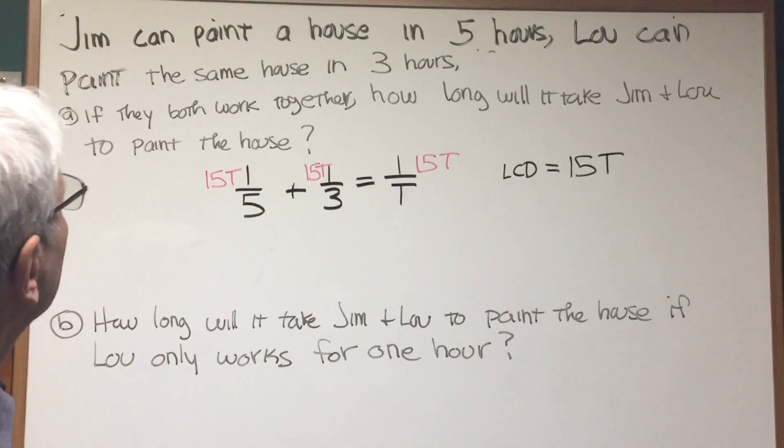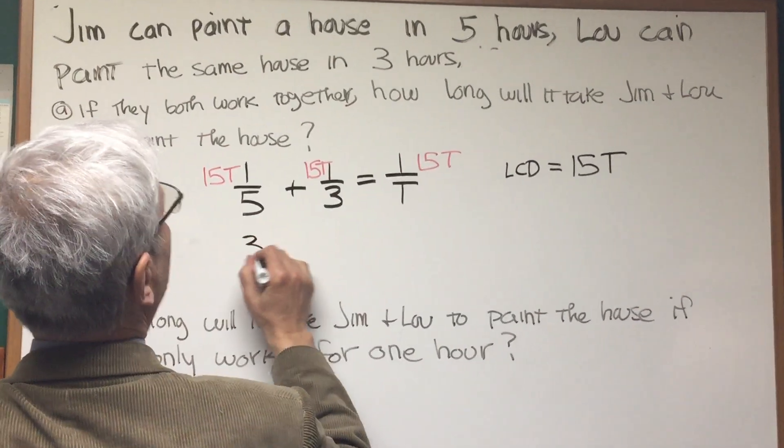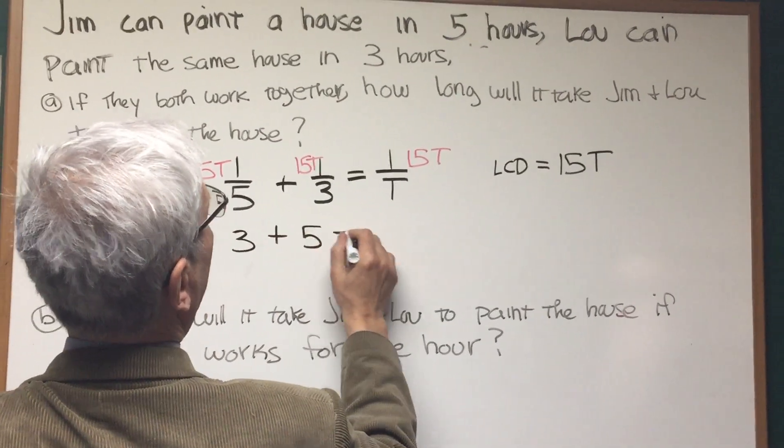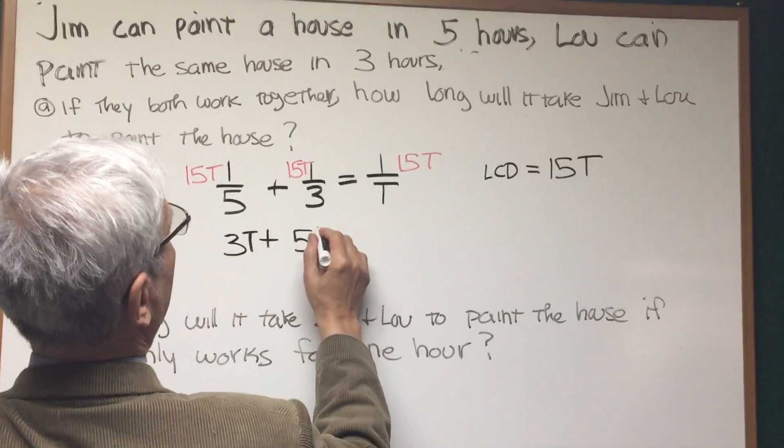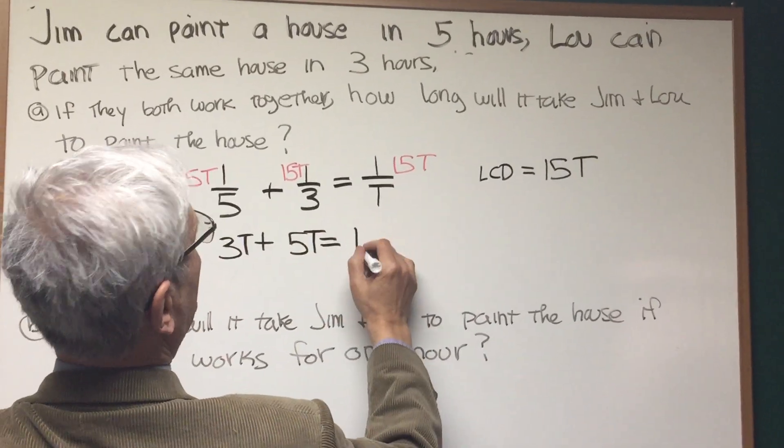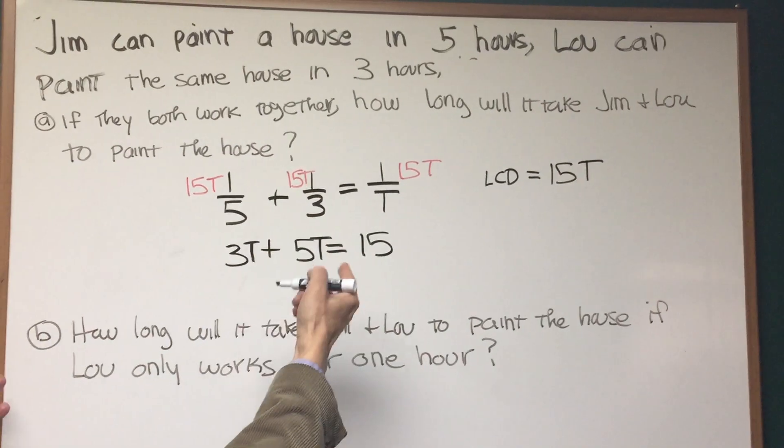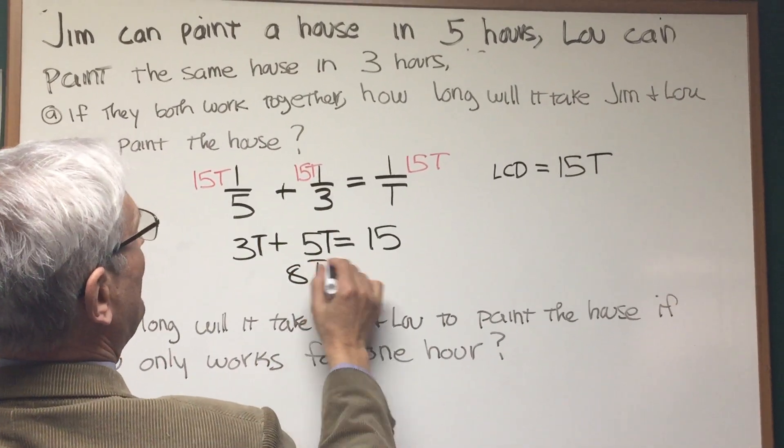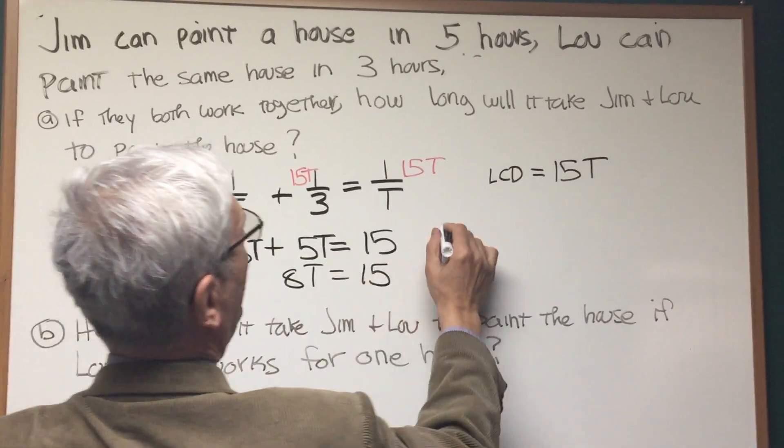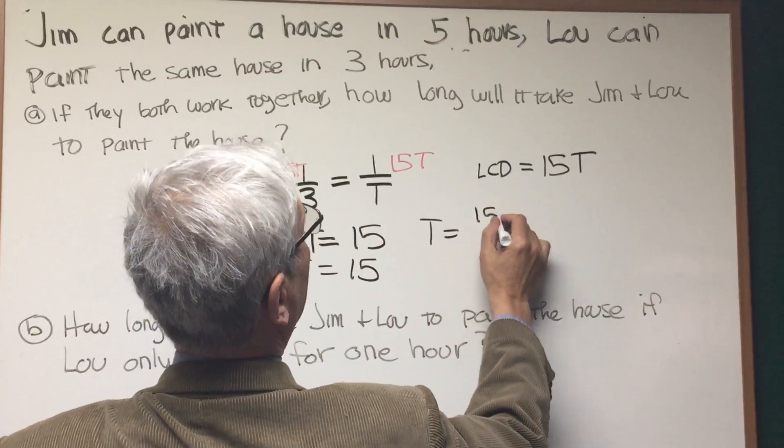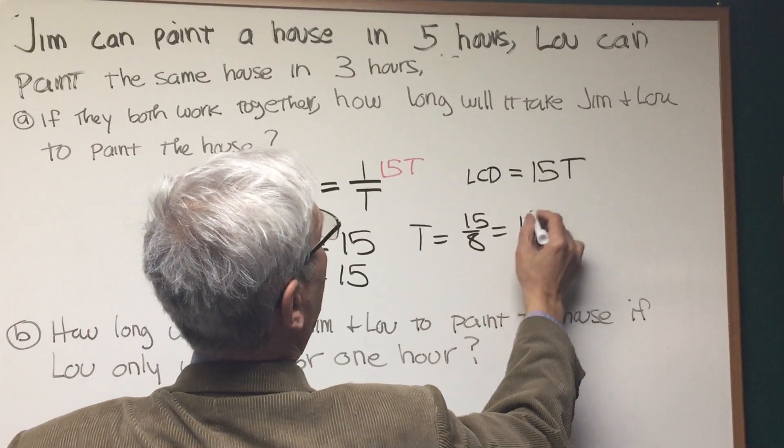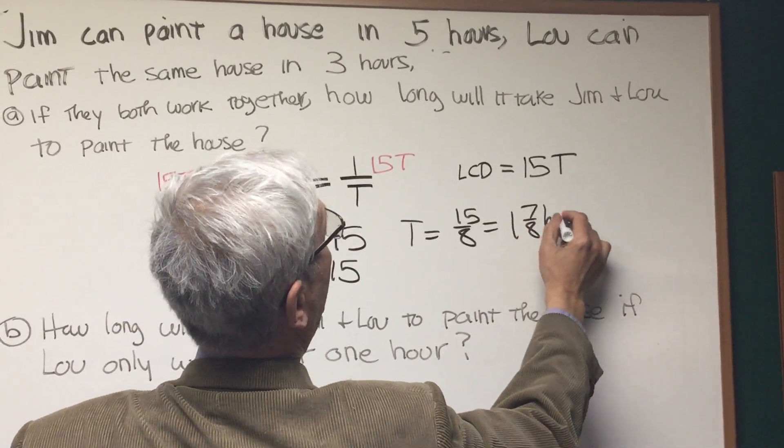And we simplify that. What do we get? We're going to get 3 plus 5, 3T plus 5T is equal to 15. Well, 3T plus 5T, that gives us 8T. And that gives us a time of 15 over 8, or 1 and 7 eighths hours.